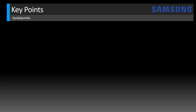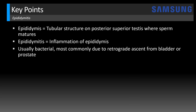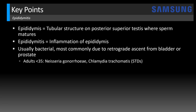Some key points: the epididymis is a tubular structure on the posterior superior testis where sperm matures, composed of three parts — the head, body, and tail. Epididymitis is inflammation of the epididymis, usually bacterial in etiology, most commonly due to retrograde ascent from the bladder or the prostate gland. The causative agent varies by age: in adult males under 35 it's more commonly a sexually transmitted disease due to gonorrhea or chlamydia, but in adults over 35 E. coli and other coliform bacteria are more commonly seen.